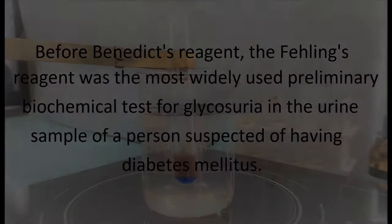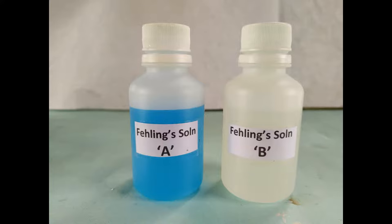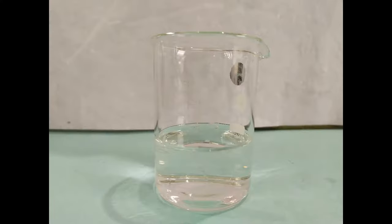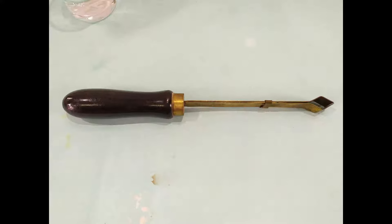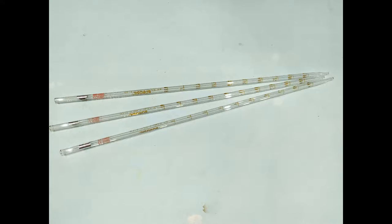To perform the Fehling's test you'll need the following: Fehling's reagent A and B, a test sample which may be a urine sample or a solution of reducing sugar, a test tube, test tube holder, water bath, and three pipettes of 1 ml capacity or three graduated droppers.